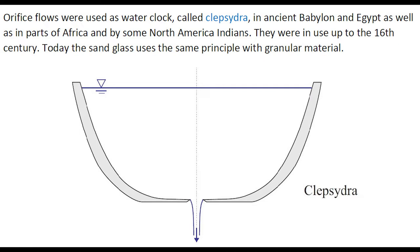Orifice flows were used as water clocks, called clepsydra, in ancient Babylon and Egypt as well as in parts of Africa and by some North American Indians. They were in use up to the 16th century. Today, the sand glass uses the same principle with granular material.